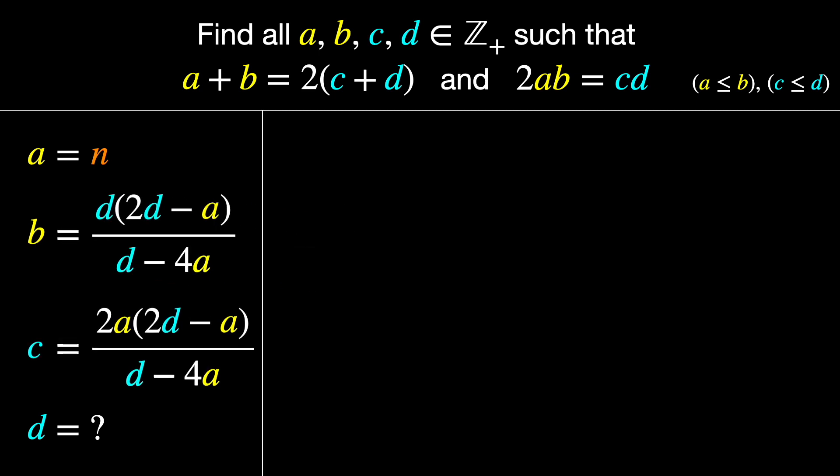Now what about D? Actually, we could plug in any integer for D, as well as A, and we'd get two rectangles with the right perimeter and area ratios. But we still have to make sure that B and C are integers. Well, one easy way to do that is to choose A and D, so that the denominator of both these formulas is 1.